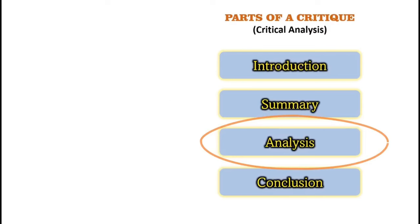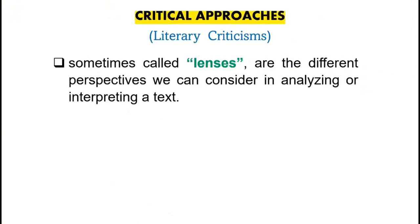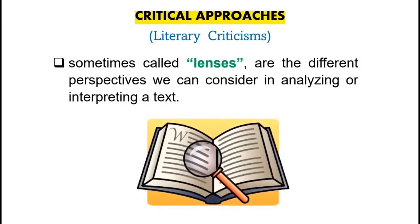You have to know that when you write the analysis of a literary piece, you have to consider several critical approaches. Critical approaches, sometimes called lenses, are the different perspectives we can consider in analyzing or interpreting a text. Kapag pinasulat ka ng literary critique, pwede kang gumamit ng iba't ibang literary approaches to analyze the text. Itong mga critical approaches na ito ay tinatawag din lenses — ito yung iba't ibang anggulo kung paano mo i-analyze or i-interpret ang isang literary work.